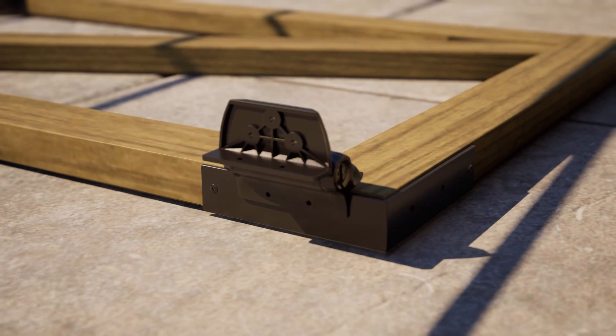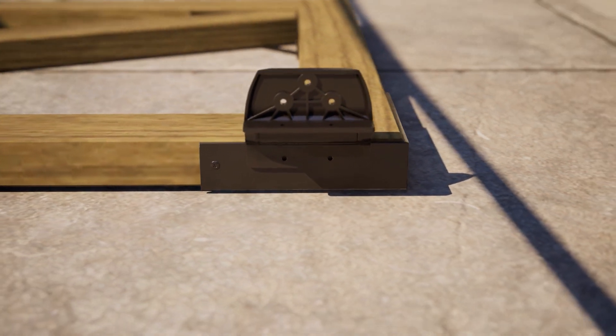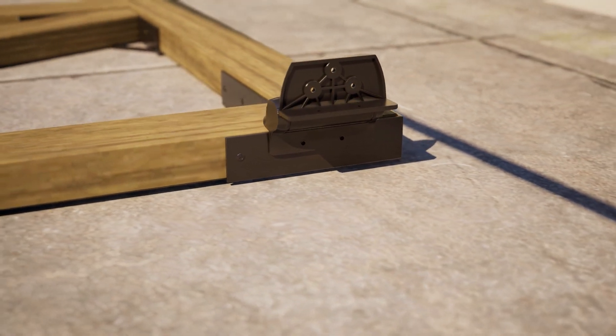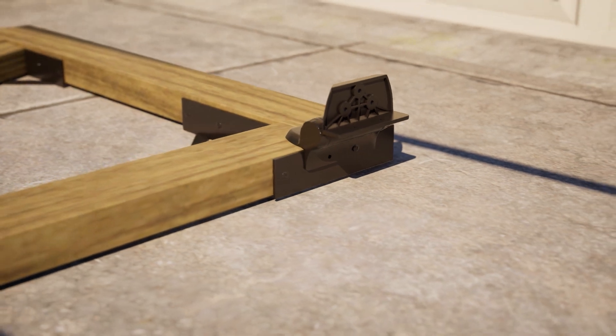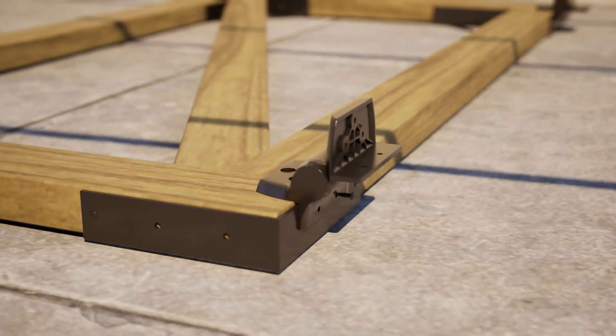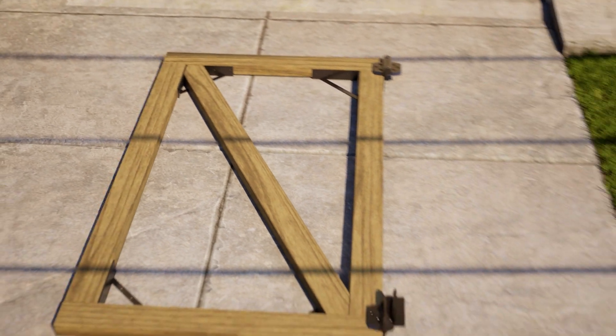Once the proper holes of the hinge flange are aligned with the holes of the outside bracket, using the wood screws in the hinge bag, proceed to screw through the hinge holes and bracket holes into the edge of the wood frame. Repeat this for the bottom hinge.